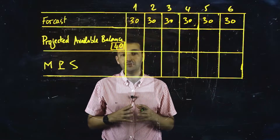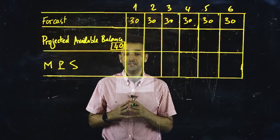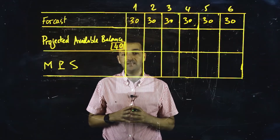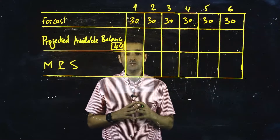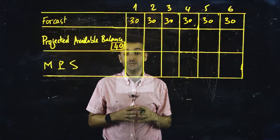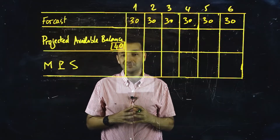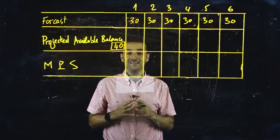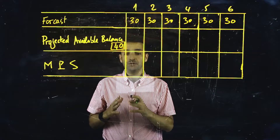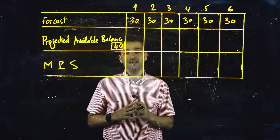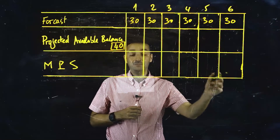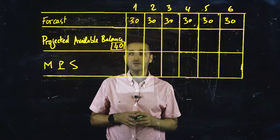The projected available balance in any period tells you if you need to schedule an MPS. In this example, we have a forecast and the projected available balance at the beginning of a six-period master schedule. If the balance is high enough to cover forecasted demand during all six periods, no MPS receipts are necessary. It appears that the projected available balance at the beginning of the six-period schedule is not enough to cover the forecasted demand for the entire schedule, so we need to calculate MPS for each period and the new projected available balance.